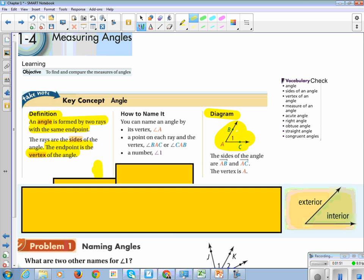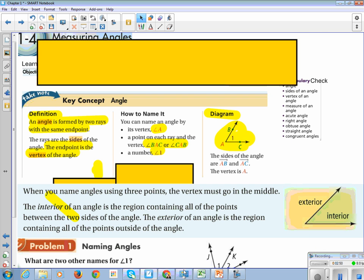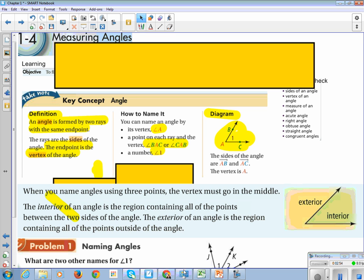Write the three ways to name this angle. We can call it angle A, using the vertex. We can use a point on each ray and the vertex—the vertex has to be in the middle—so we can call this angle BAC where A is the vertex in the middle, or we can call it CAB. Or because this angle is labeled one, we can call it angle 1. When you name angles using three points, the vertex must go in the middle.